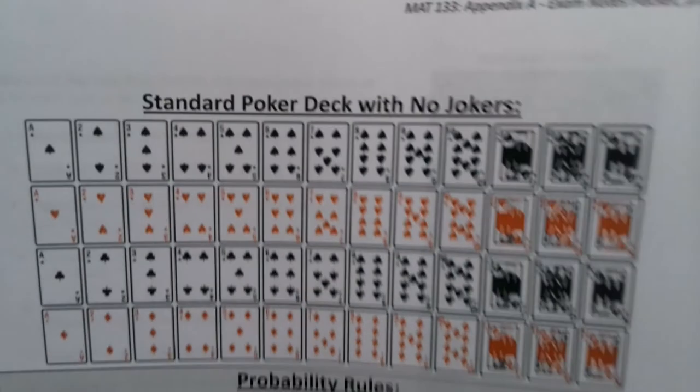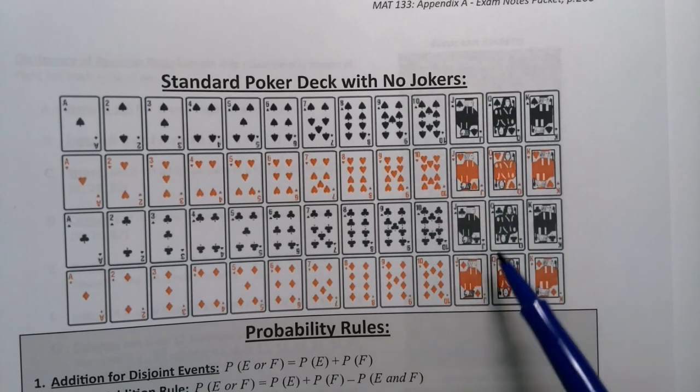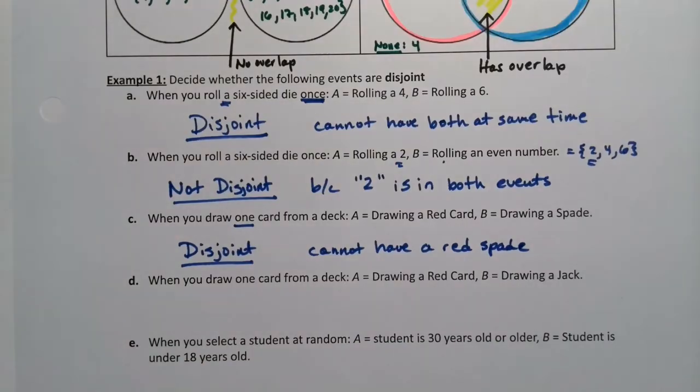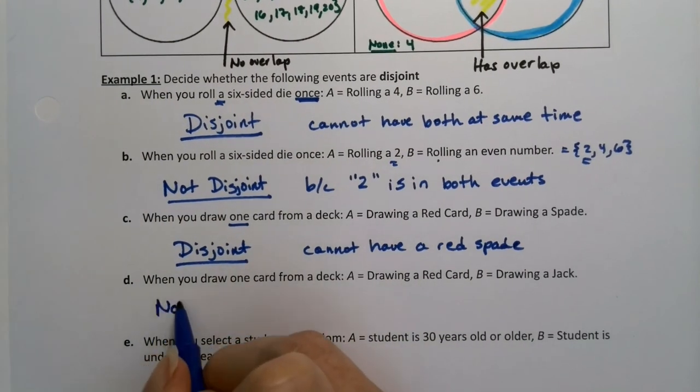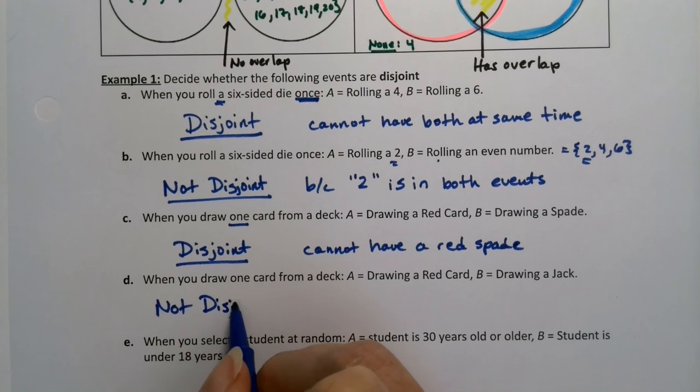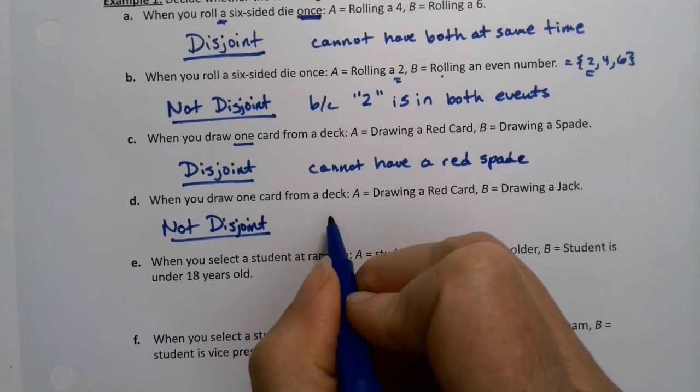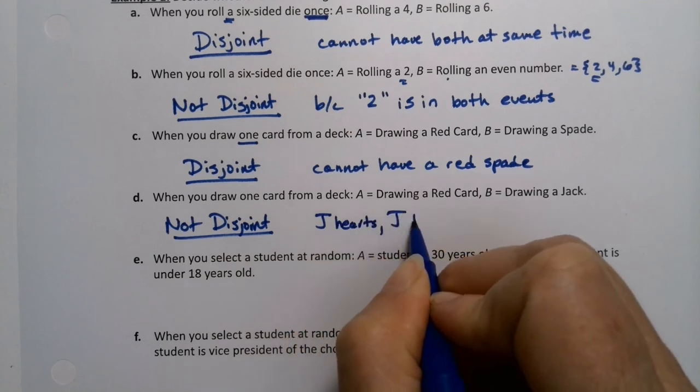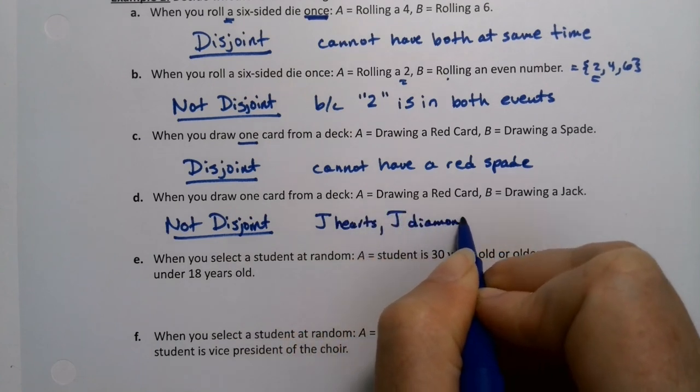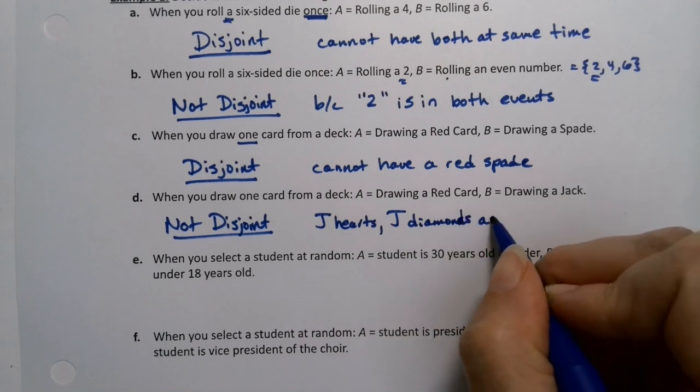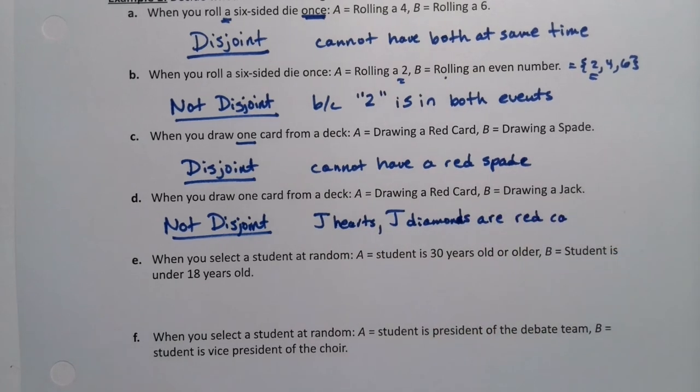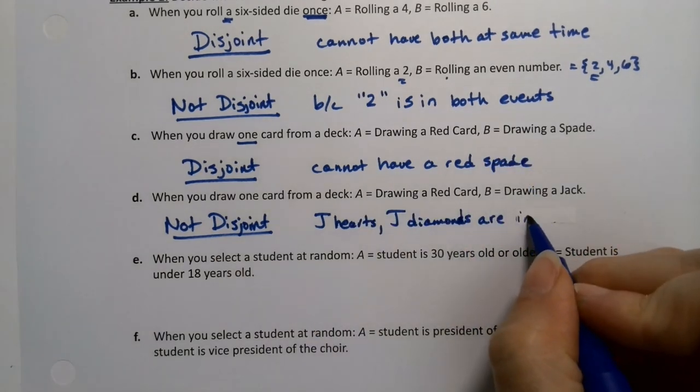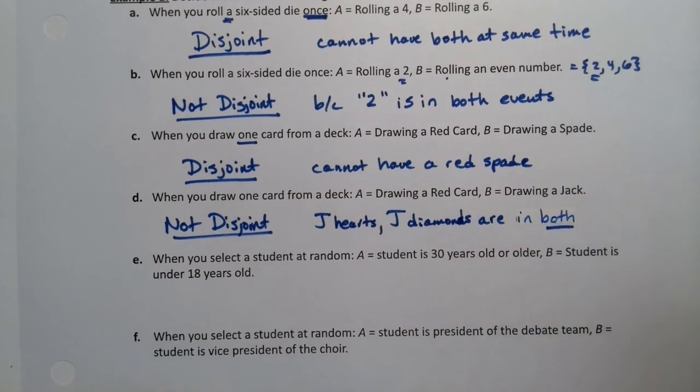What about a red card and a jack? Well, that can happen because there's a jack of hearts and a jack of diamonds. So since that can happen, that's not disjoint. It is possible to draw a card that is both red and jack. So that is not disjoint. The jack of hearts and the jack of diamonds are red cards. They're in both events. They're jacks and they're red.